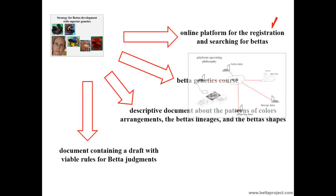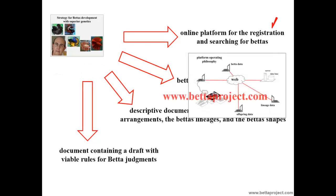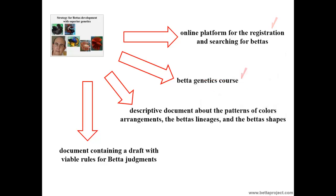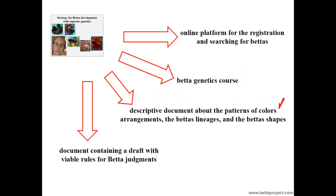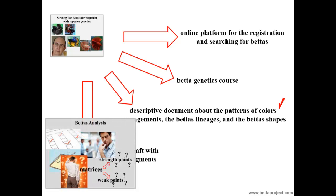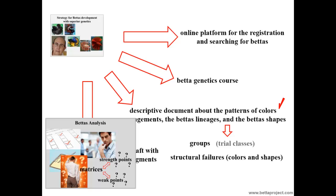The first proposition is an online platform for the registration and searching for bettas — watch the video with this same name on our website for more details. The online betagenetics course can be accessed through betaproject.com. The third proposition is the document on the Patterns of Colors Arrangements, Descriptions of Lineages, and Betta Shapes. We have the video lecture 'Betas Analysis: Classes and Patterns for the Evaluation into Specialized Exhibition,' where we define the groups in which any betta can fit in a specialized exhibition, as well as showing the types of failures that must be observed in each phenotype.